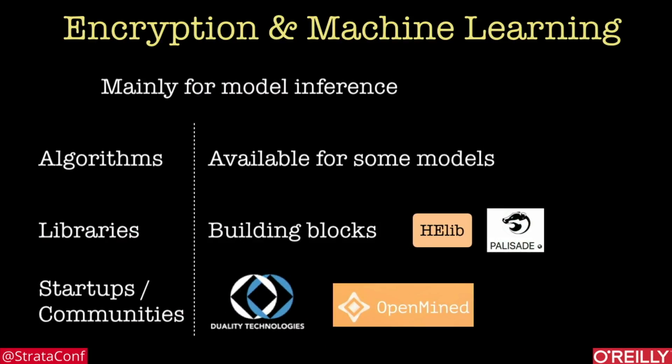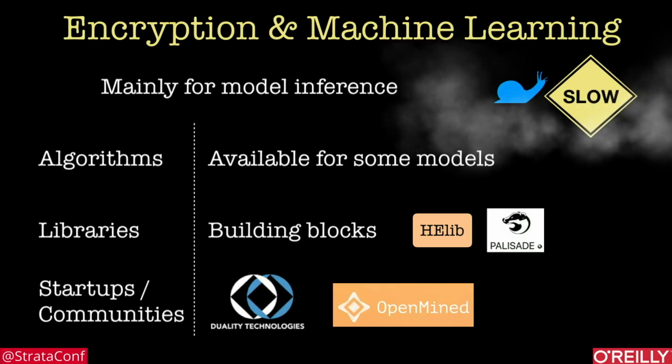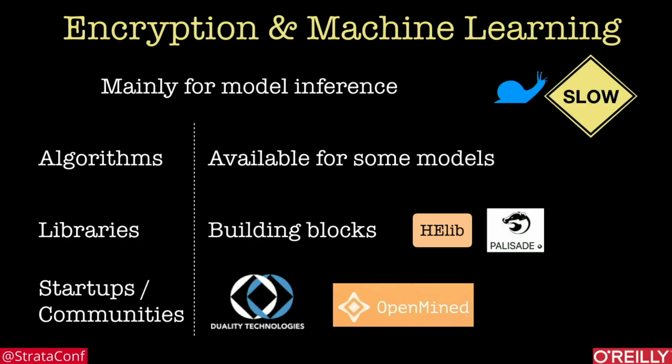There's also a growing number of researchers and entrepreneurs who are exploring the possibility of using machine learning against encrypted data. Earlier this year there were a couple of open source libraries for homomorphic encryption that seem to have served as building blocks for these startups and researchers. The main thing here is that these tend to be still slow, so these are still works in progress, but a lot of people are working on this intersection between encryption and machine learning.